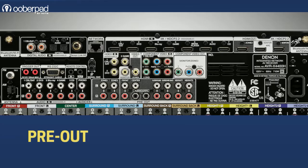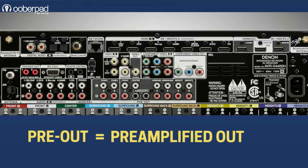Pre-out stands for pre-amplification output. As the name indicates, it is a parallel output made available before the signal is amplified to be reproduced by the loudspeaker. Pre-out is a volume control, source-selected analog audio output.